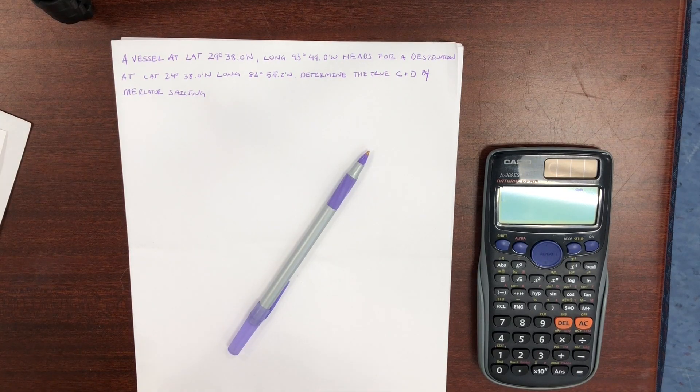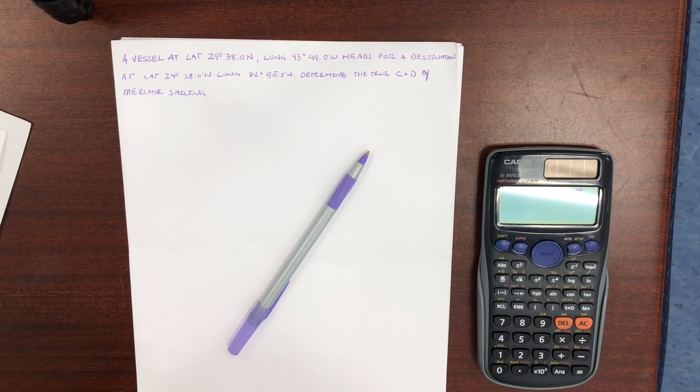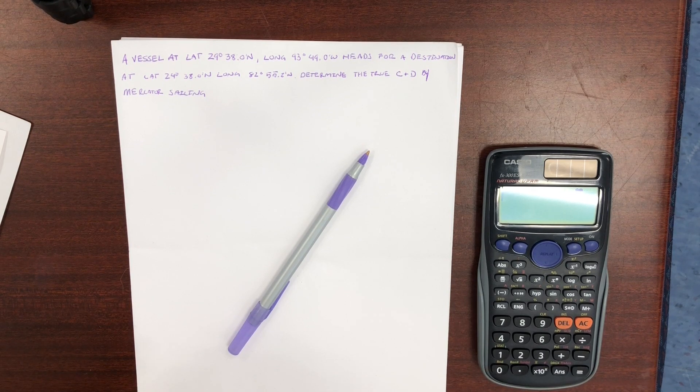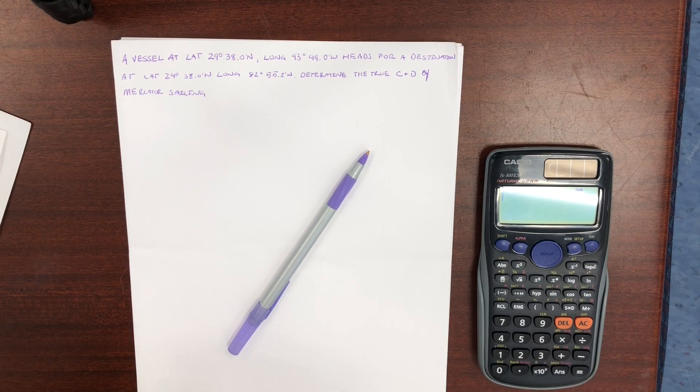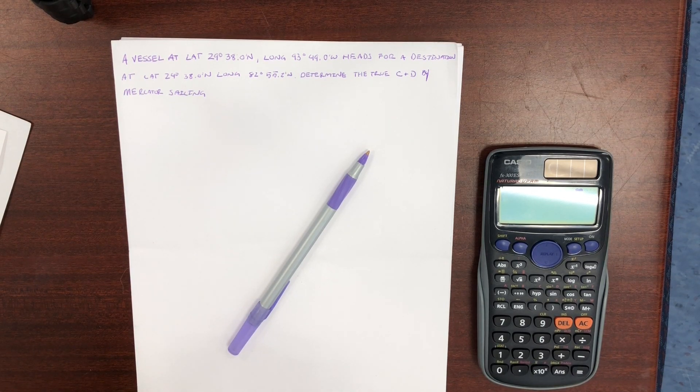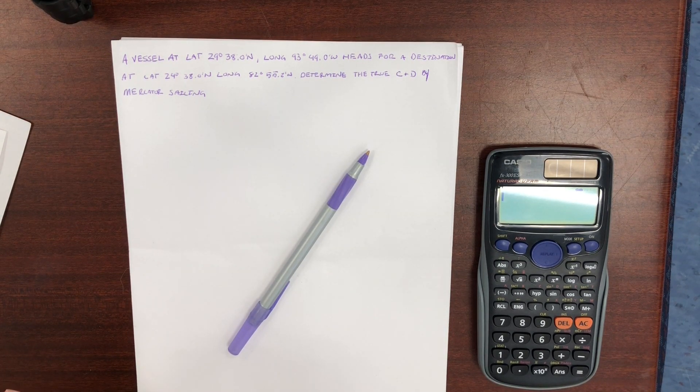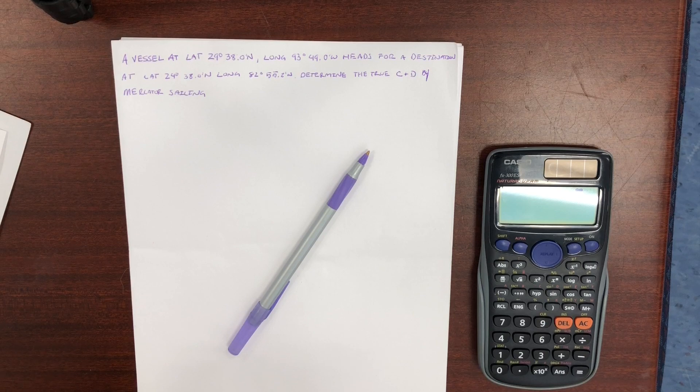A vessel at latitude 29 degrees 38.0 minutes north, longitude 93 degrees 49 minutes west, heads for a destination at latitude 24 degrees 38.0 north, longitude 82 degrees 55.2 minutes west. Determine the true course and distance by Mercator Sailing.